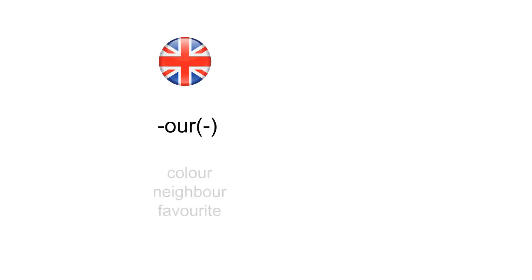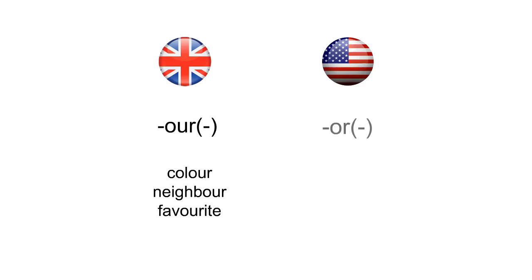Words ending or including -our in British English, like colour, neighbour, and favourite, become -or in American English: color, neighbor, and favorite.